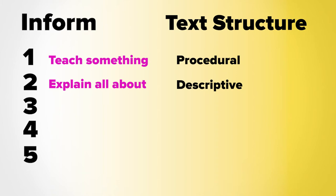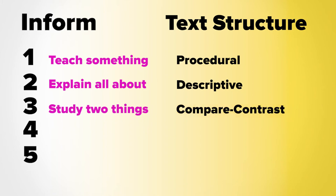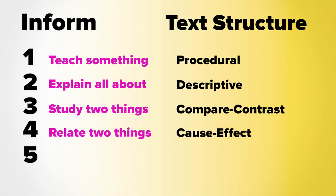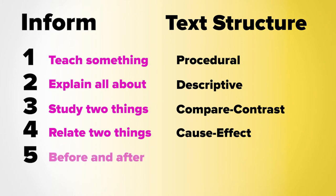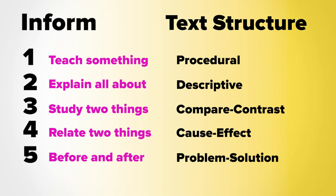Number three: if an author wants to study two things in one text, then he must use a compare-contrast text structure. Number four: if an author wants to reveal a bad situation that's now better, he must use a problem-solution text structure.